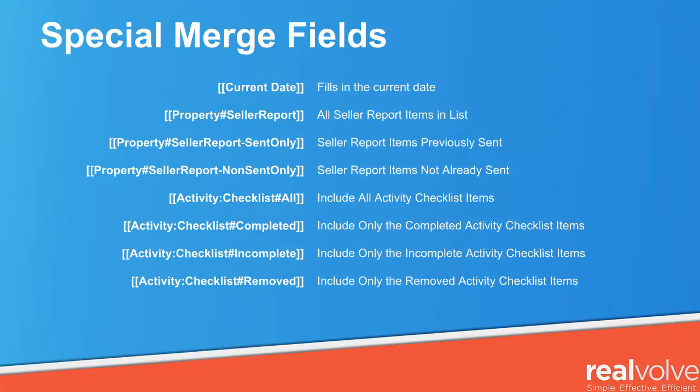This gives you an easy way to update your seller by email, updating him or her on news about the items that you've done for the current property. The checklist items are used for activities that have checklists in them. You can send an update email to someone based on the checklist items in that activity — the entire list of all the checklist items, only those that have been completed, those that have not been completed, or those that are marked as not needed.